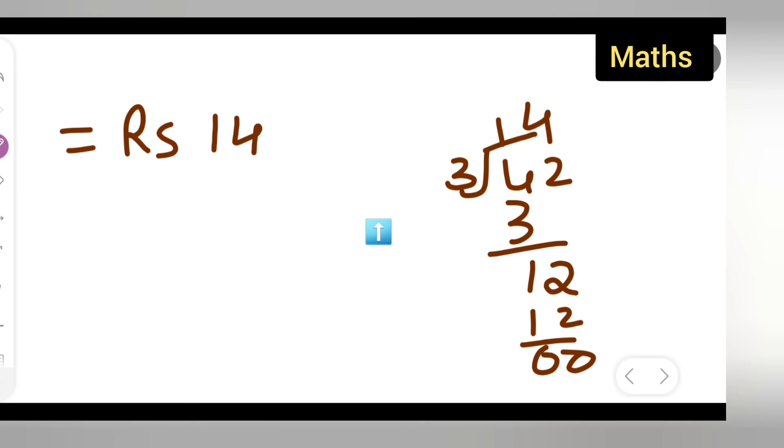So I can write down your final answer to be rupees 14. I hope you all have understood how to find the value of 1 upon 3 of rupees 42.